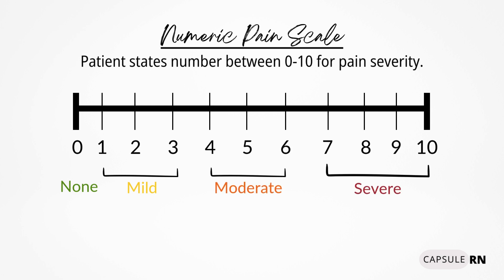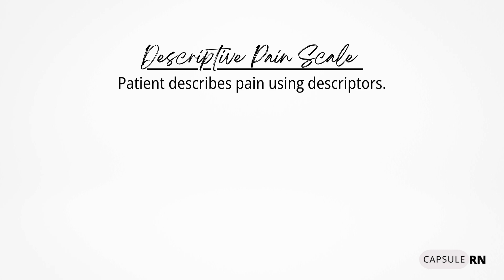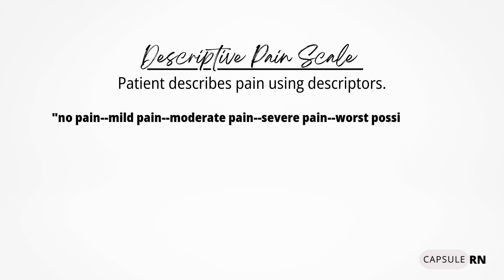Make sure you know the protocols for your own facility in terms of what numbers constitute mild, moderate, and severe pain on the numeric pain scale. A second type of pain scale used commonly for adults is a descriptive pain scale, in which the patient describes their pain using words like no pain, mild pain, moderate pain, severe pain, or the worst possible pain.